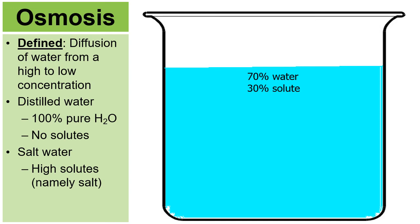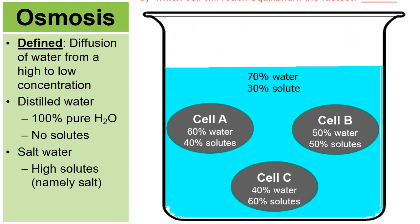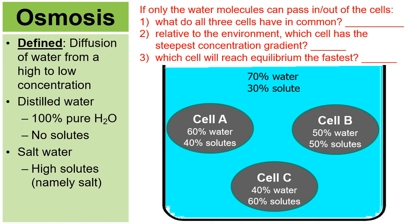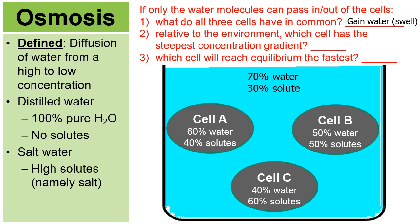Here's another practice problem with a container of water and three cells. All three cells are filled with a hypertonic solution — they're all going to gain water through osmosis and they're all going to swell. Relative to the environment, cell C has the steepest or greatest concentration gradient, because there's a bigger difference between the environment and cell C. Cell A is going to reach equilibrium the fastest because it's already closest to equilibrium.